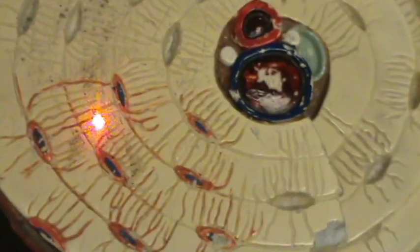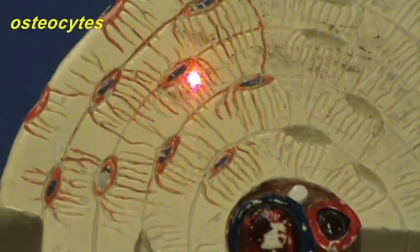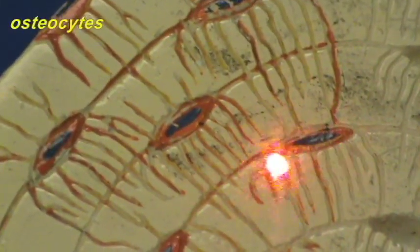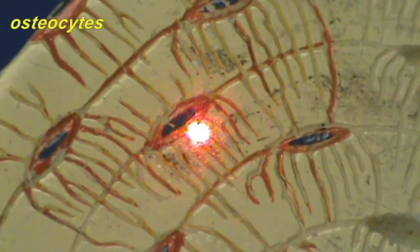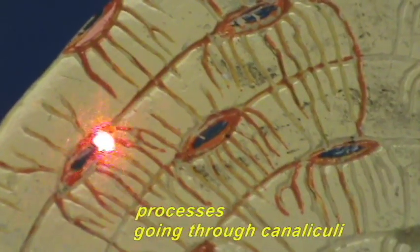Here again we can see the osteocytes represented. You can see our osteocytes colored in with their blue nuclei and processes going through the canaliculi so that the osteocytes are in communication with one another.